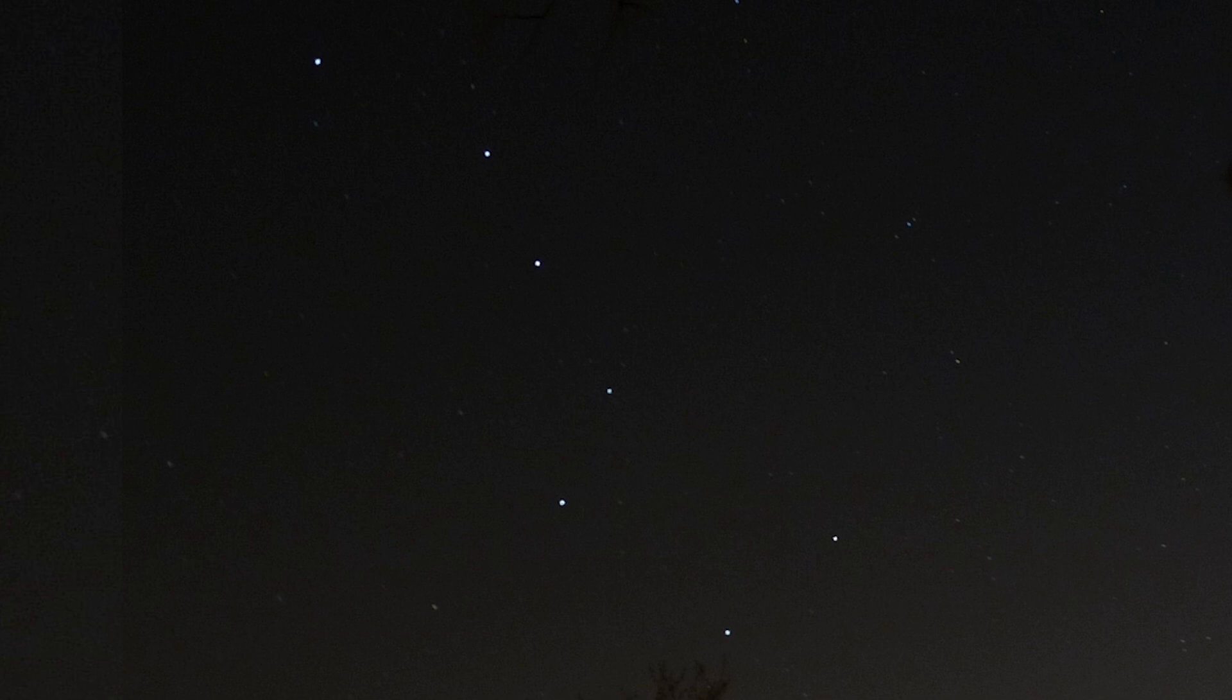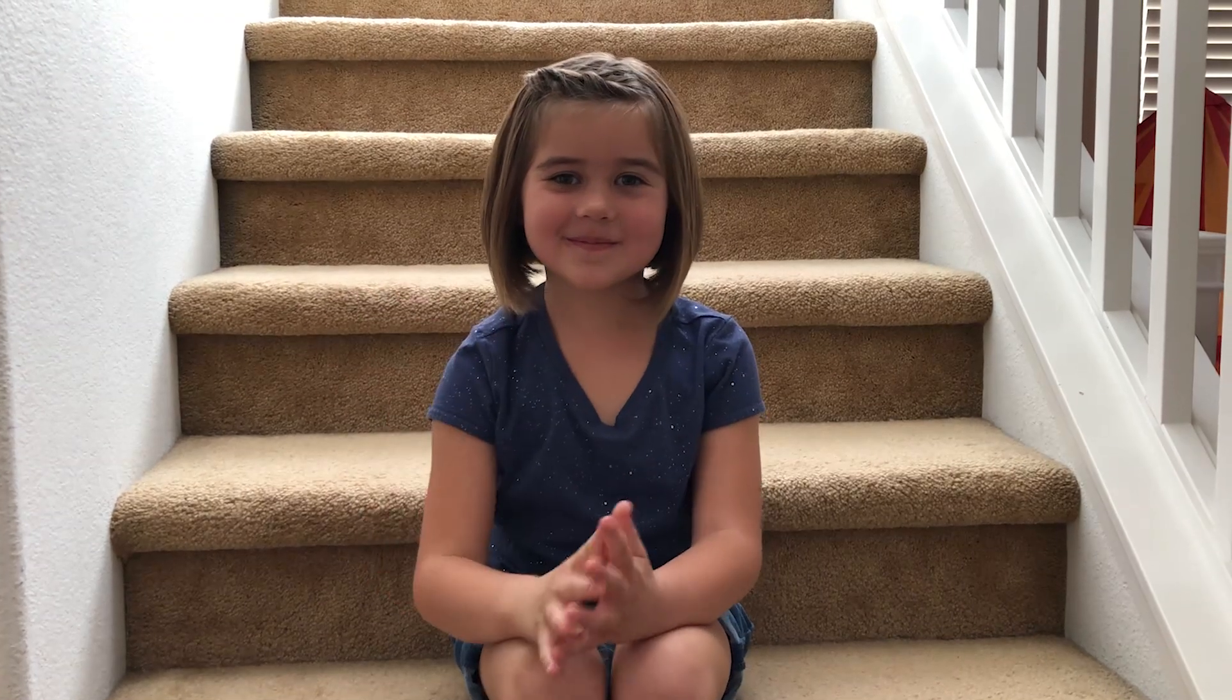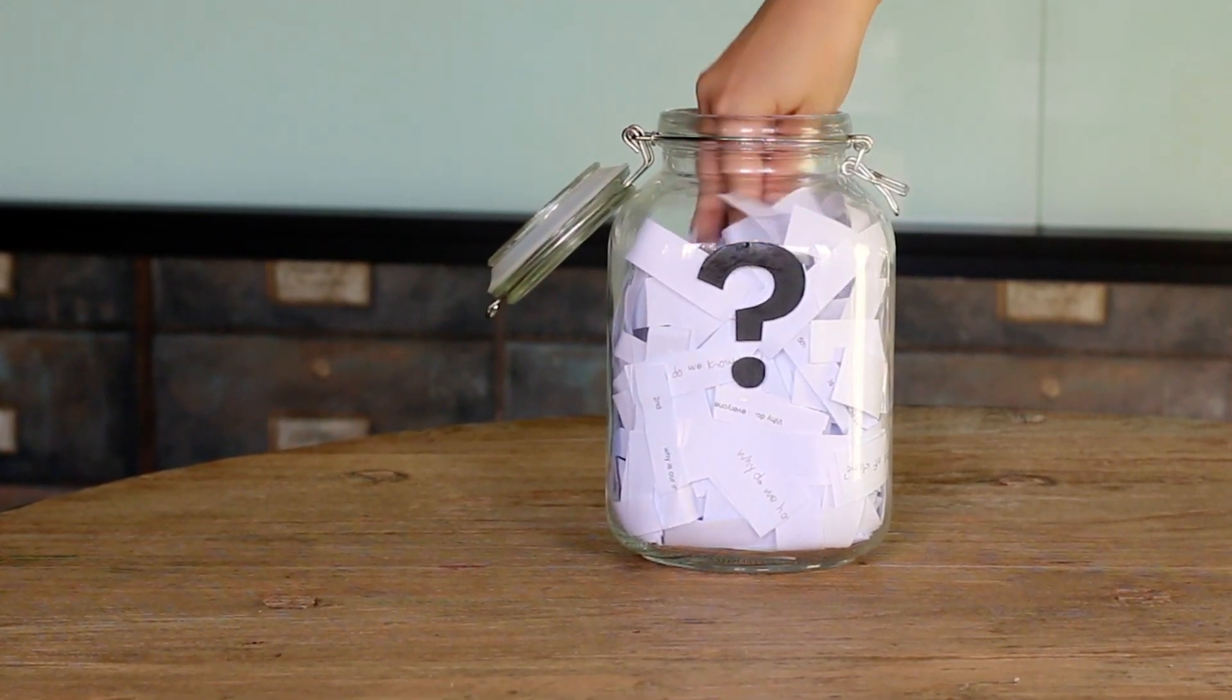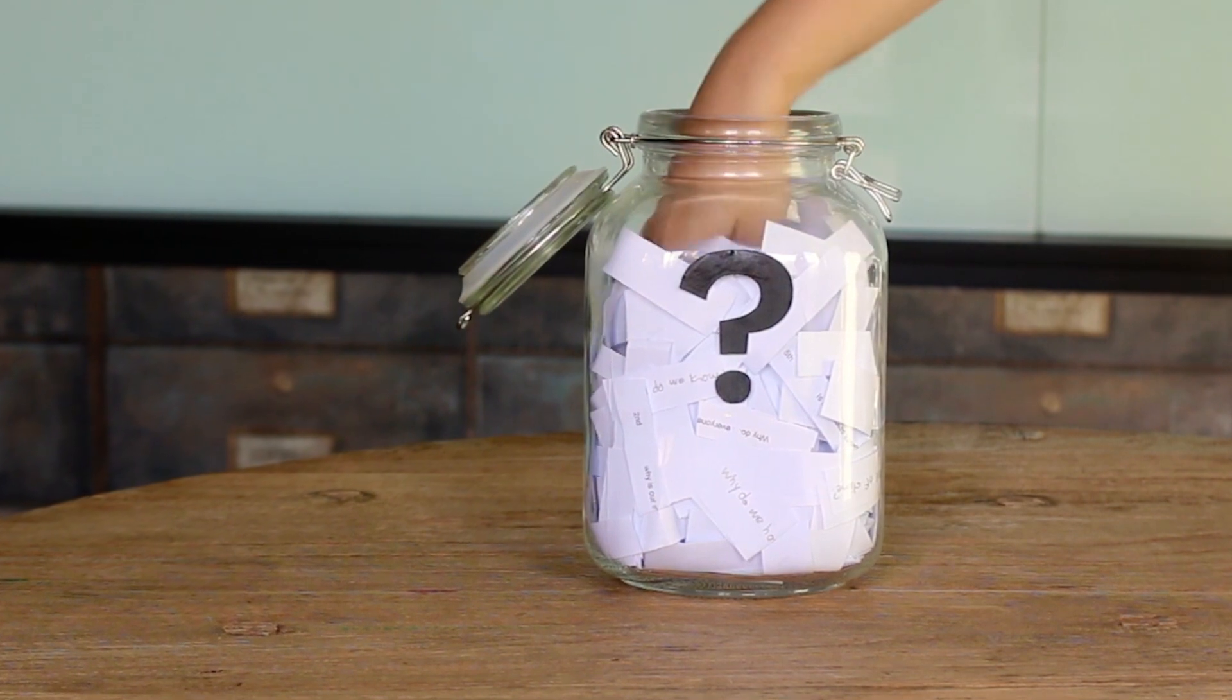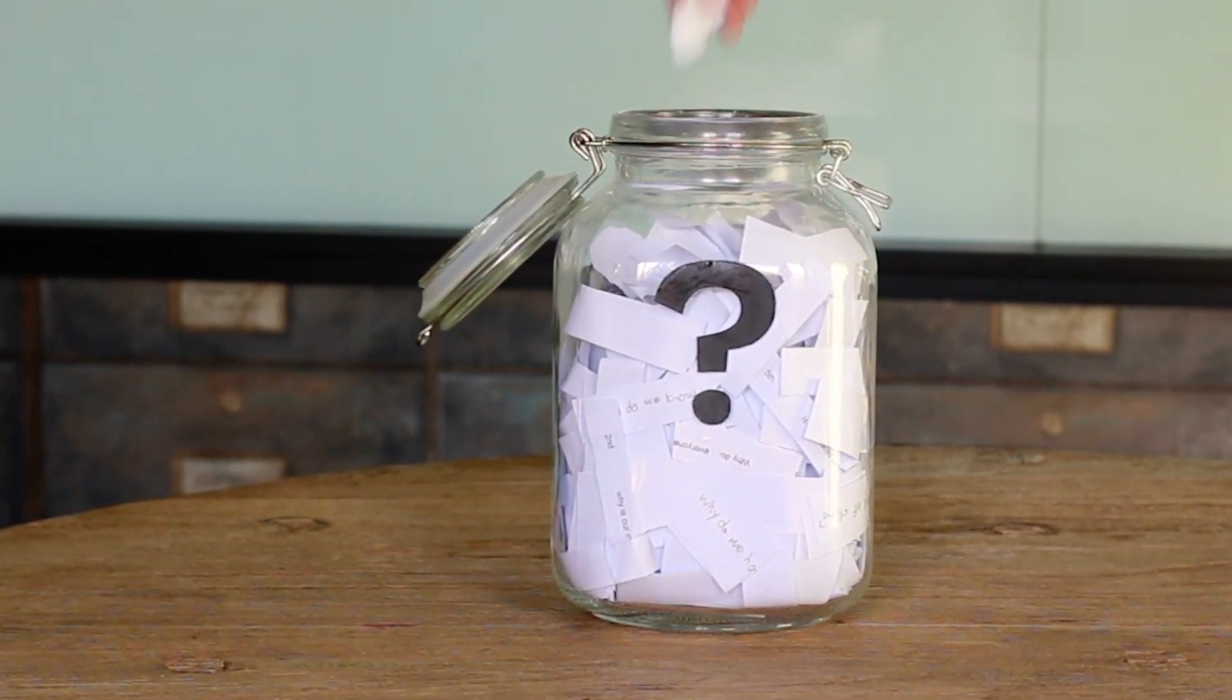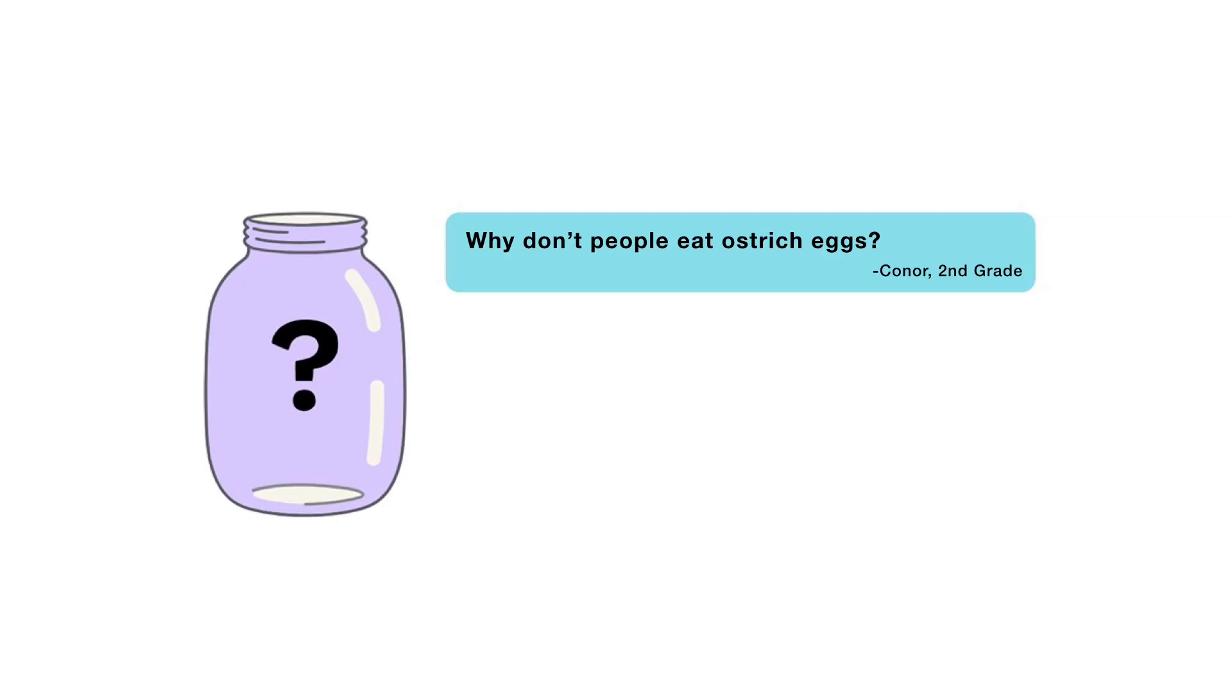That's all for this week's question. Thanks Madeline for asking it. Now for the next episode, I reached into my question jar and picked out three questions sent in to us that I'm thinking about answering next. When this video is done playing, you'll get to vote on one. You can choose from Why don't people eat ostrich eggs? What country has the largest population? Or, who invented the calculator?